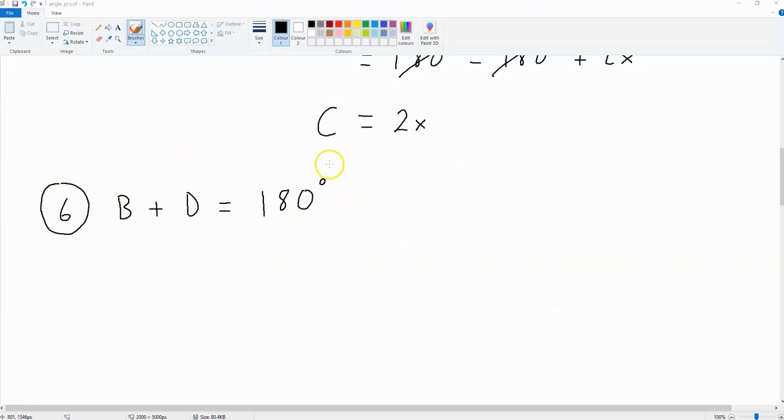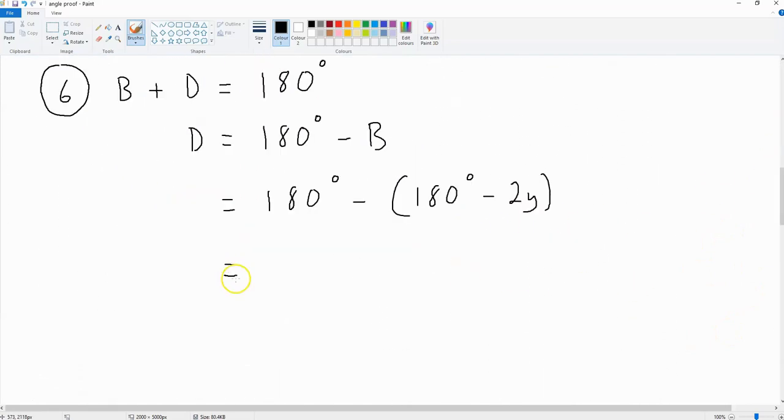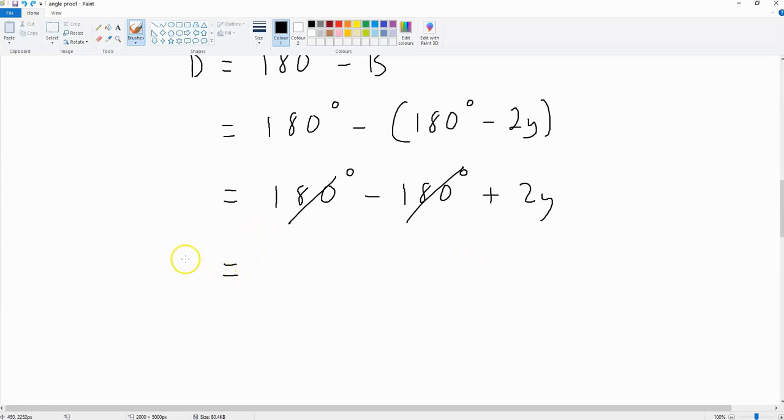B plus d is 180 degrees. This will mean that d is 180 degrees minus b. And b is, in fact, 180 degrees minus 2y. We have this written down up here. If we simplify this equation, we get 180 degrees minus 180 degrees plus 2y. And these two cancel each other out. So, what we're left with is d is equal to 2y.